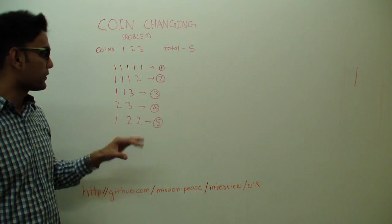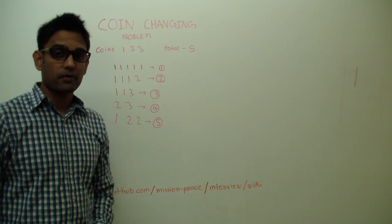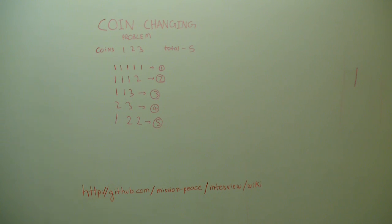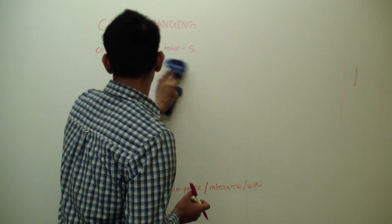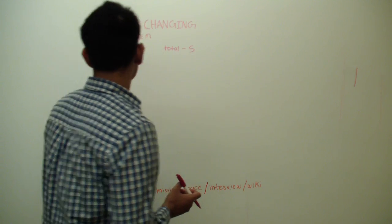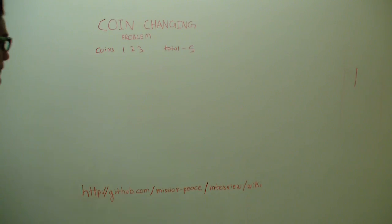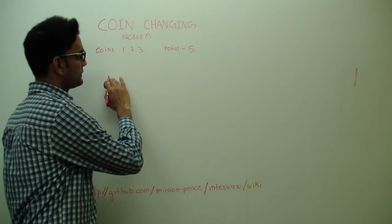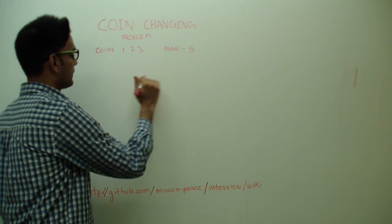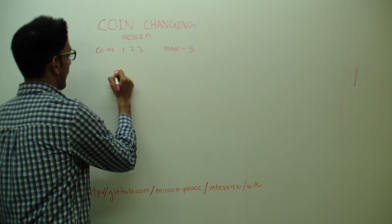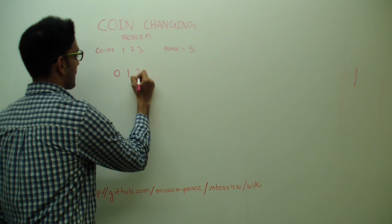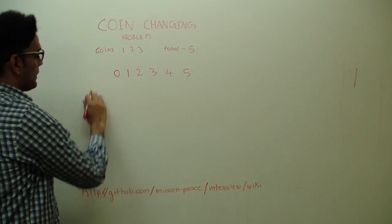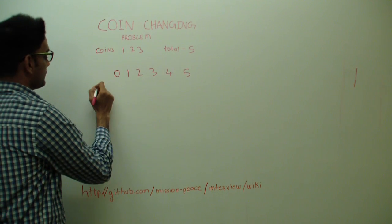So how do we find the total number of ways? We'll use dynamic programming to solve this problem. We start by writing 0 to 5 on the columns, and in the rows we write 1, 2, and 3.